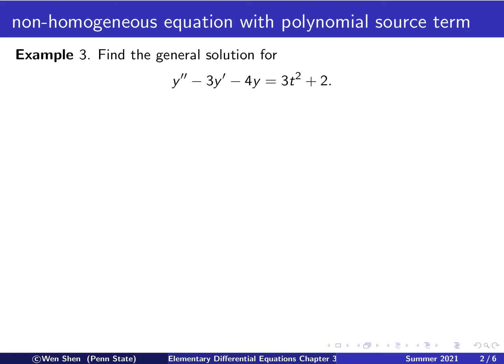Let's get started with an example. We want to find the general solution for this equation, where the left-hand side is a typical second-order equation with constant coefficients, and the right-hand side — this is the function we call g of t — is a polynomial. Here we have chosen it to be 3t squared plus 2.